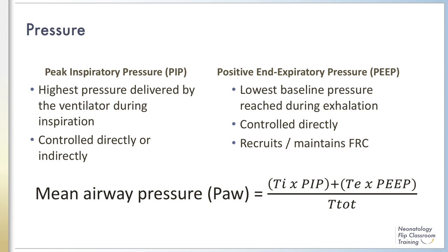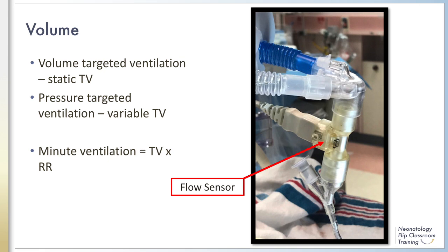The mean airway pressure is the average amount of airway pressure delivered to the patient during a respiratory cycle. Mean airway pressure is indirectly controlled in conventional mechanical ventilation, as compared to high-frequency ventilation. During conventional ventilation, mean airway pressure can be changed by making adjustments in the PIP, PEEP, inspiratory and expiratory times, as well as the respiratory rate.